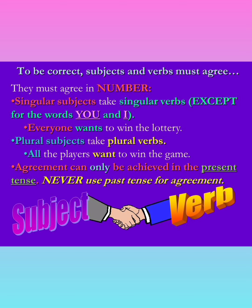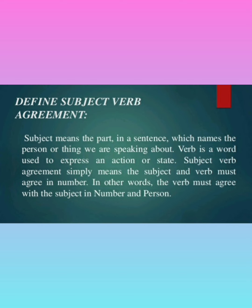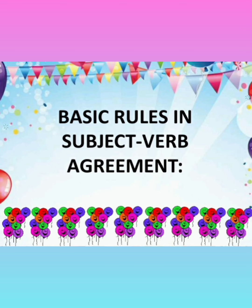Agreement can only be achieved in the present tense. Never use past tense for subject-verb agreement. Now we are going to get a definition of subject-verb agreement. Subject means the part in a sentence which names the person or thing we are speaking about, or who is doing or going to perform the action. Verb is a word used to express an action or state. Subject-verb agreement simply means the subject and verb must agree in number and person.